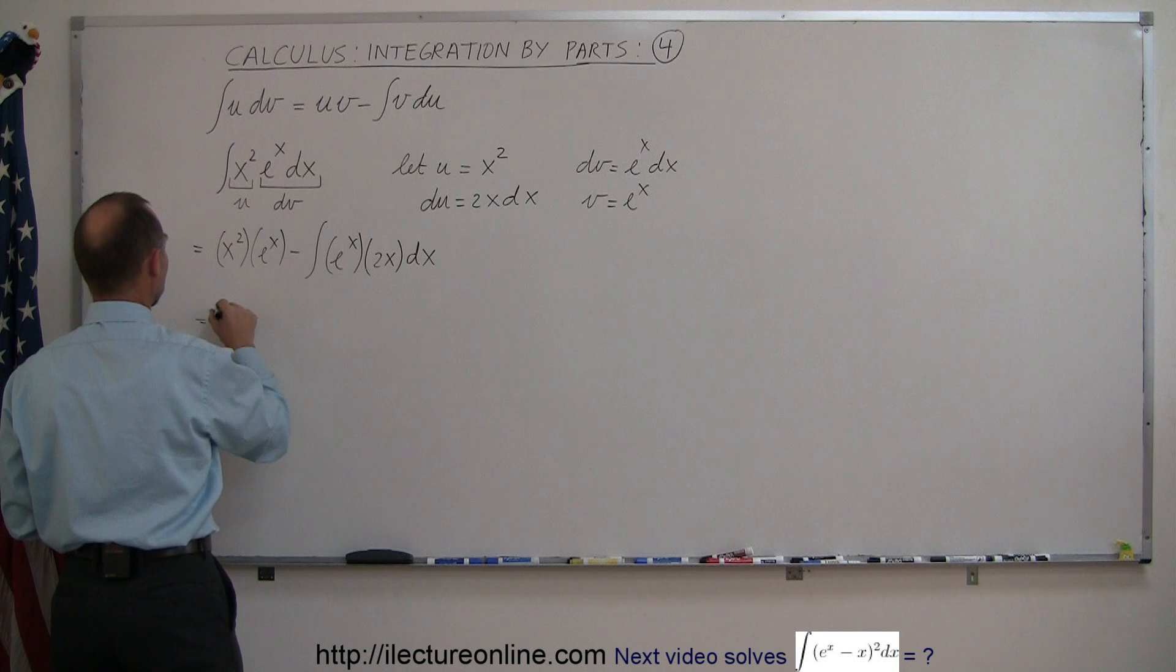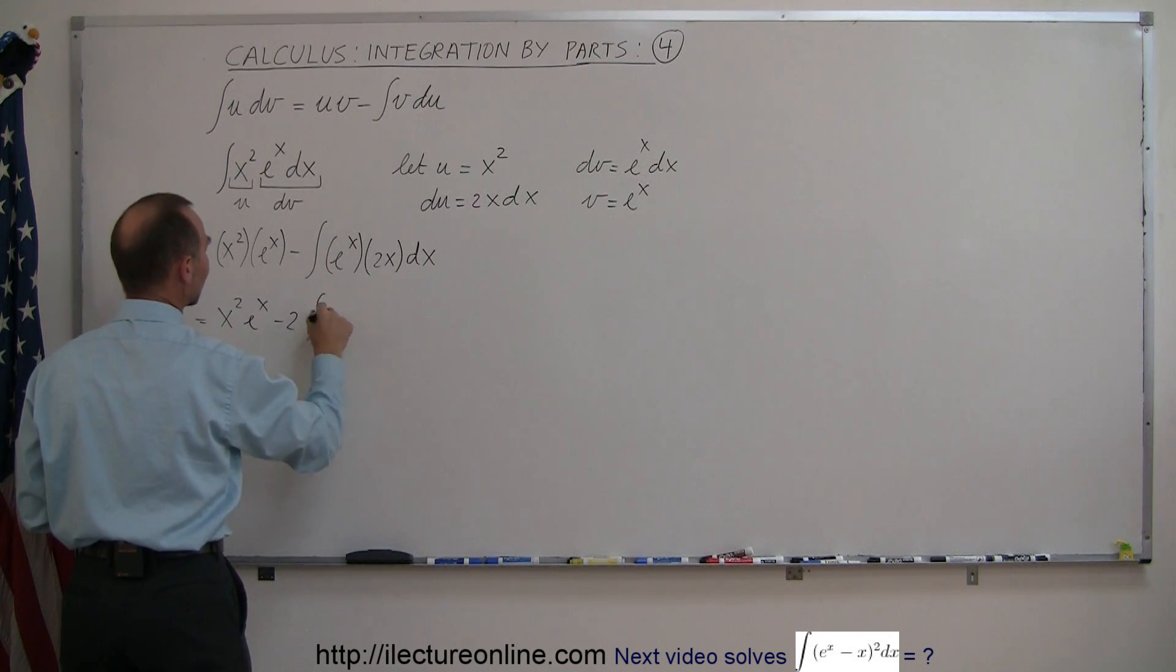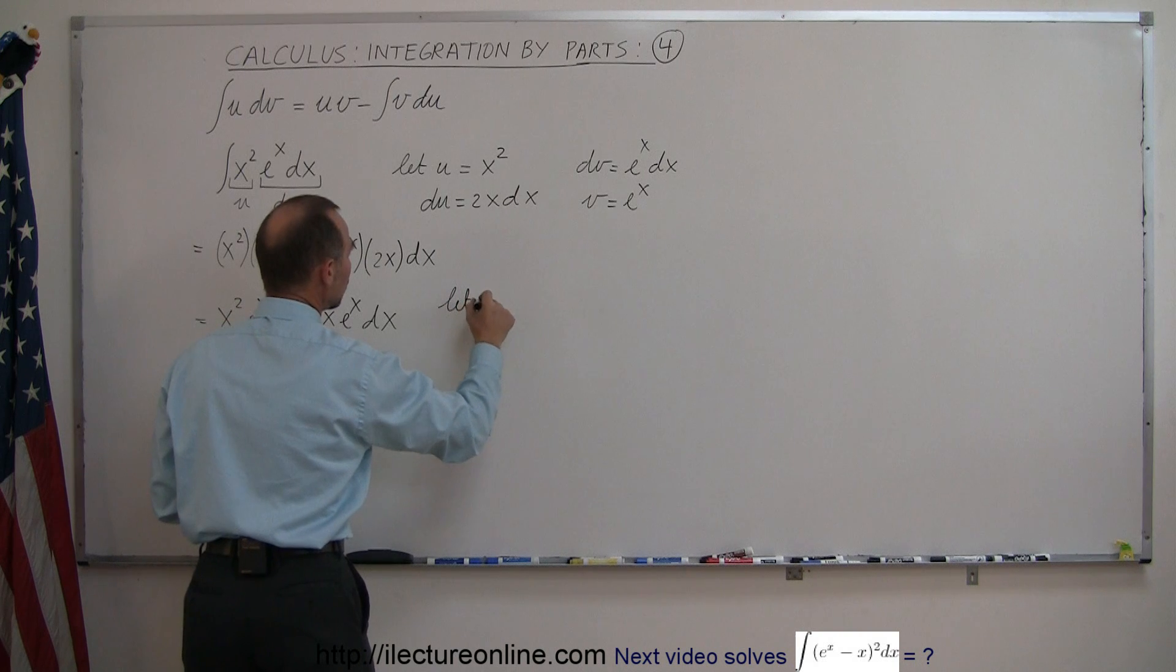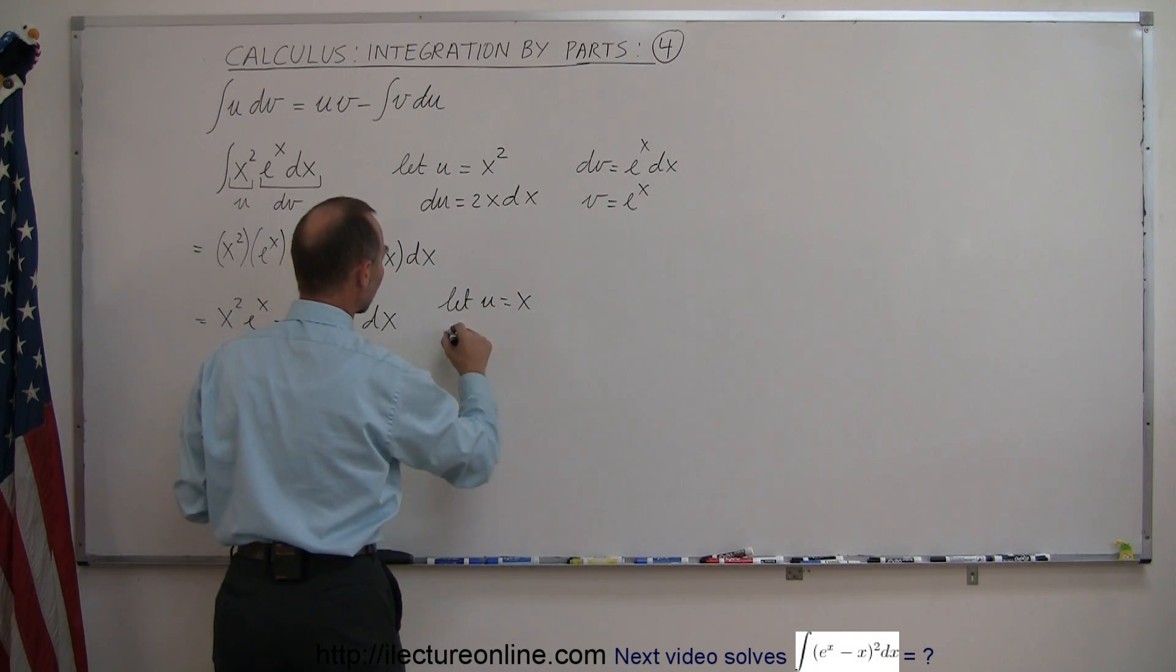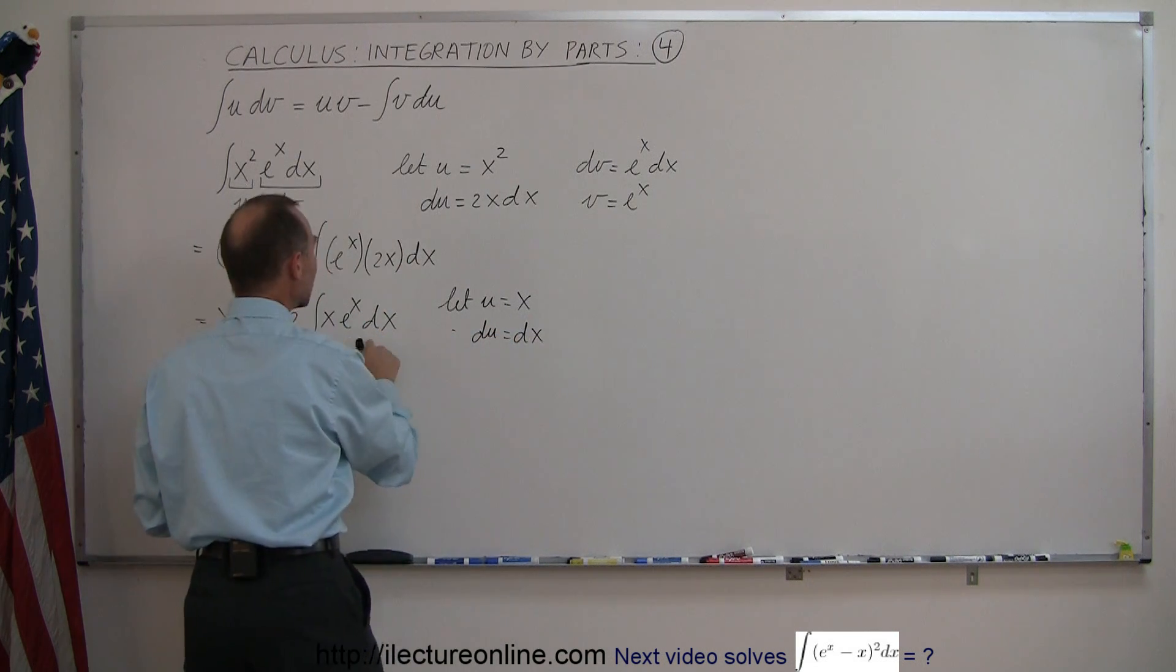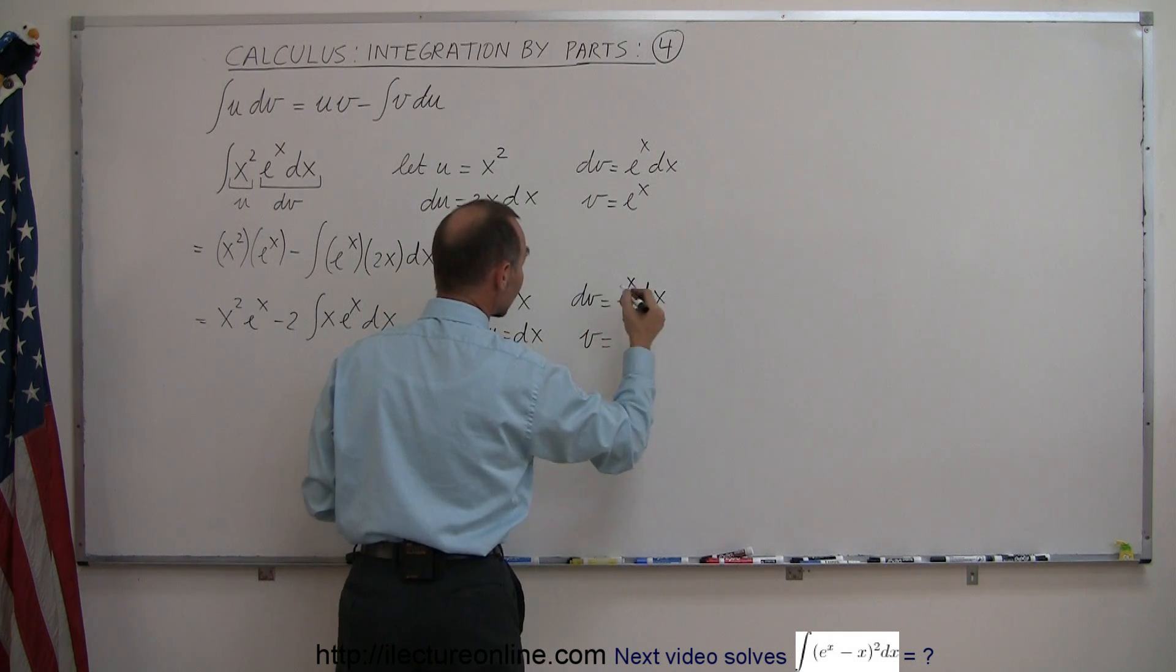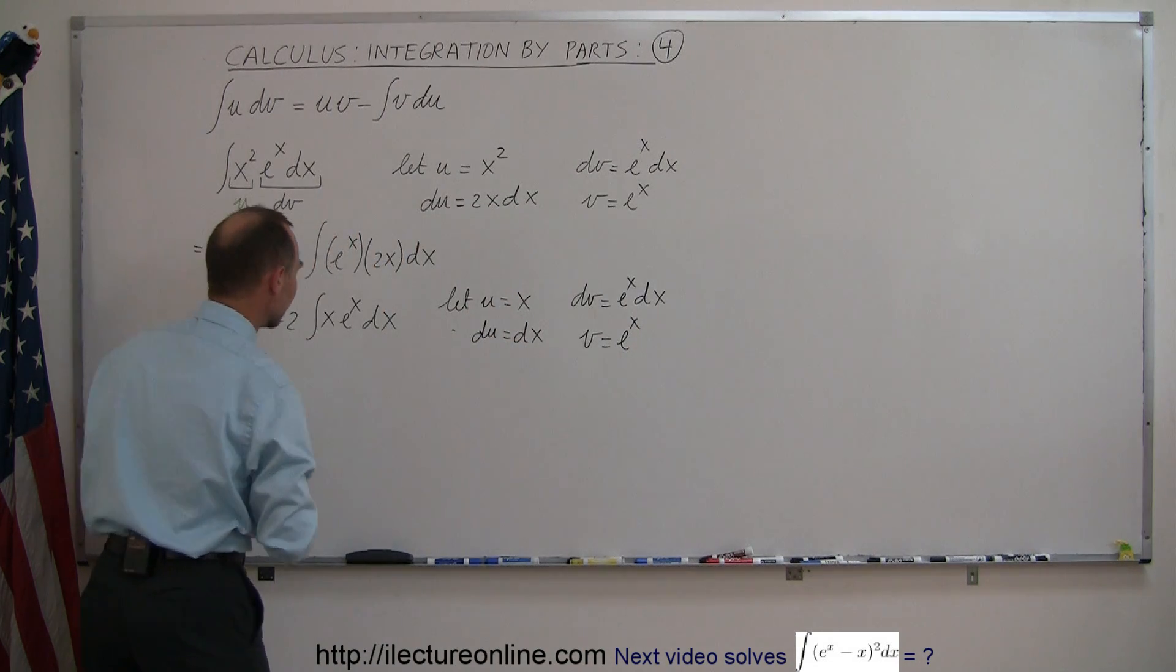So, simplifying this first, we get x squared times e to the x minus 2 times x e to the x dx. And then we do this whole thing a second time. We let u equal x. So du will be equal to dx. And we'll let e to the x dx be dv. And then v will then be the integral of that, which is e to the x plus a constant of integration. But we'll leave that out till the very end.